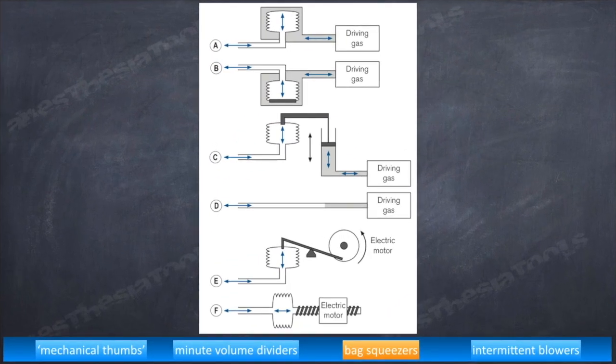These are the various types of bag squeezer ventilators. First one is rising bellows arrangement. B is descending bellows arrangement. C is pneumatic piston with mechanical linkage. D is pneumatic piston. Next is cam-driven linkage from an electric motor. And the last one: screw-threaded piston or worm drive powered by electric motor.